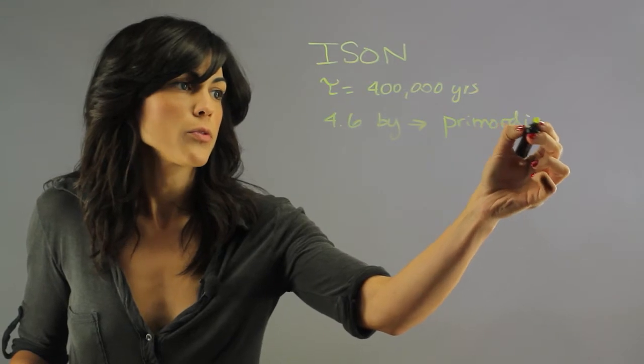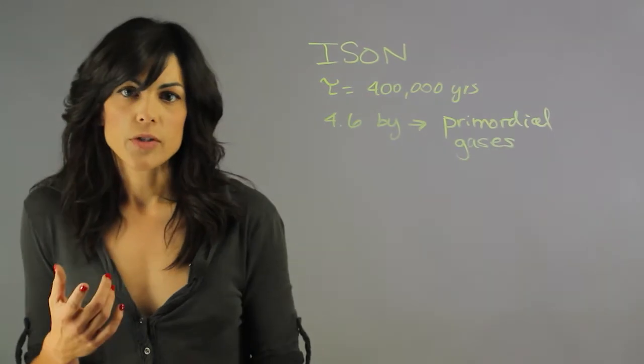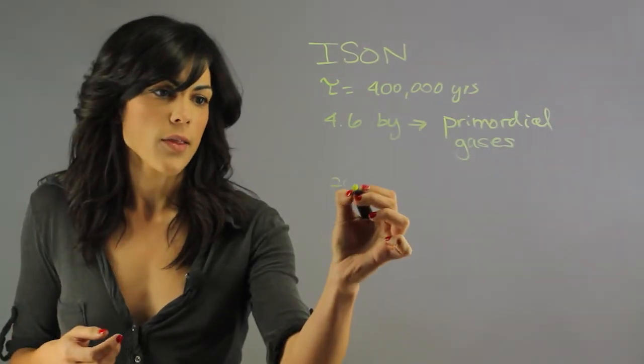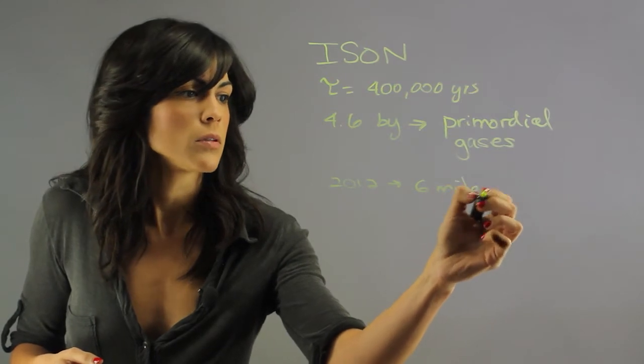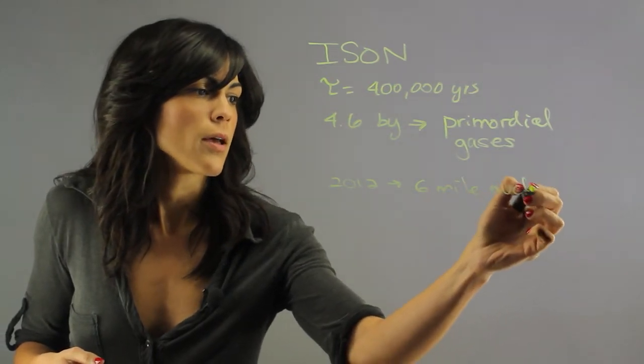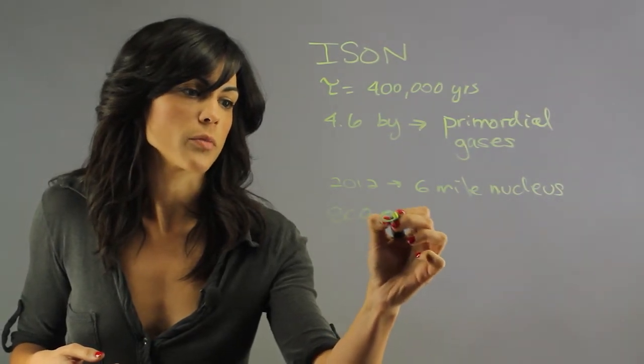So it was supposed to get really close to the sun. We saw it first in 2012, and we saw that it had about a six-mile nucleus. And it was supposed to get 800,000 miles away from the sun.